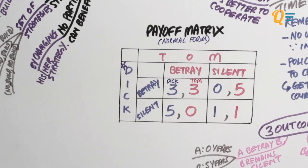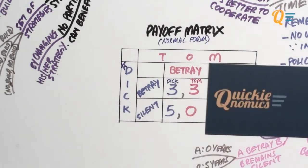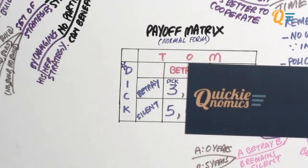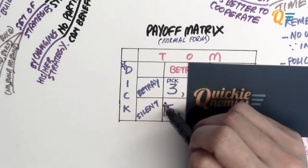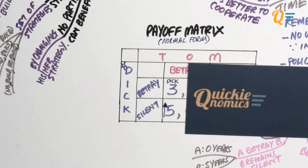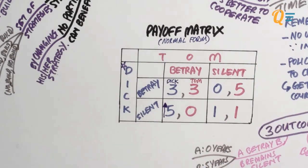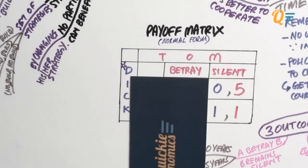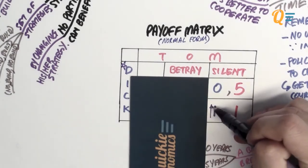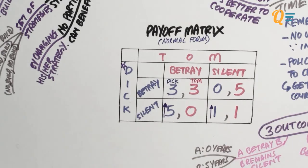Let's focus on Dick's decision. If Tom is going to betray Dick, Dick is better off getting three years than five years, so he would choose to betray. Now if Tom chooses to remain silent, comparing zero years and one year, Dick would obviously prefer zero years in prison — so again he chooses to betray Tom. No matter what Tom does, Dick will always choose to betray.